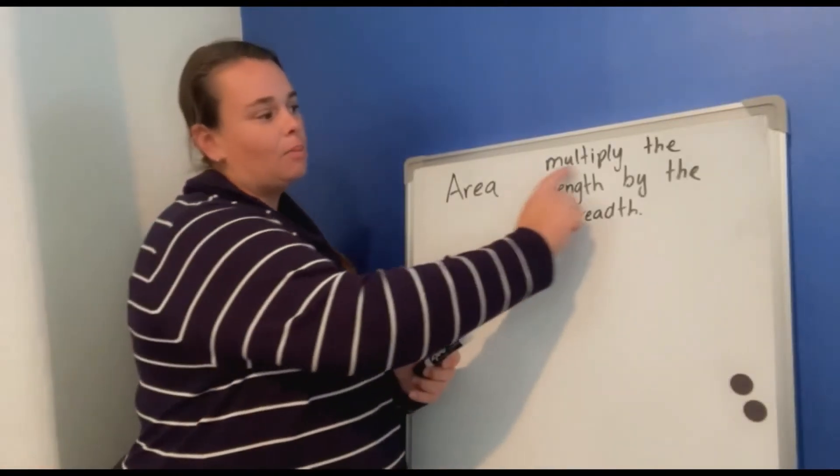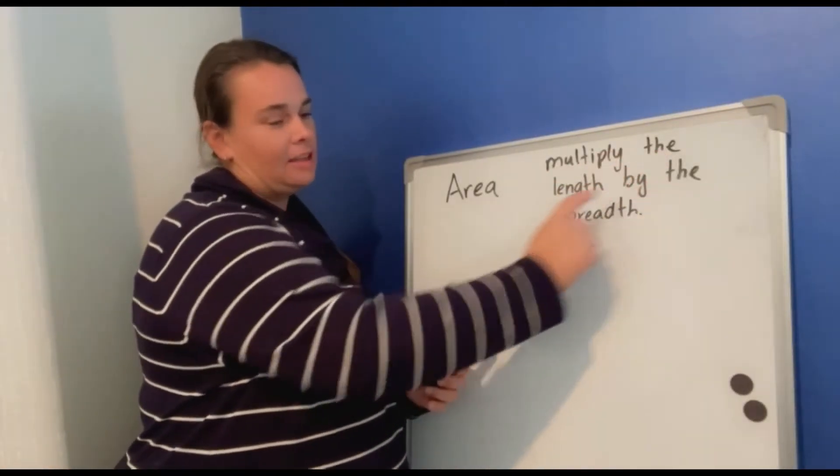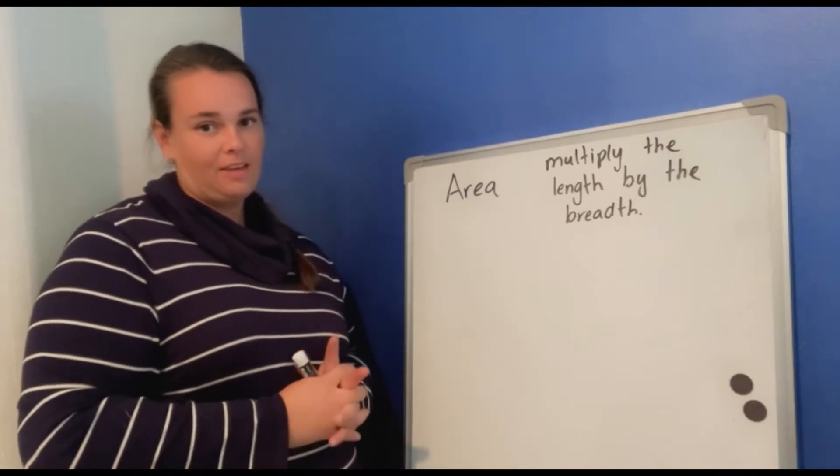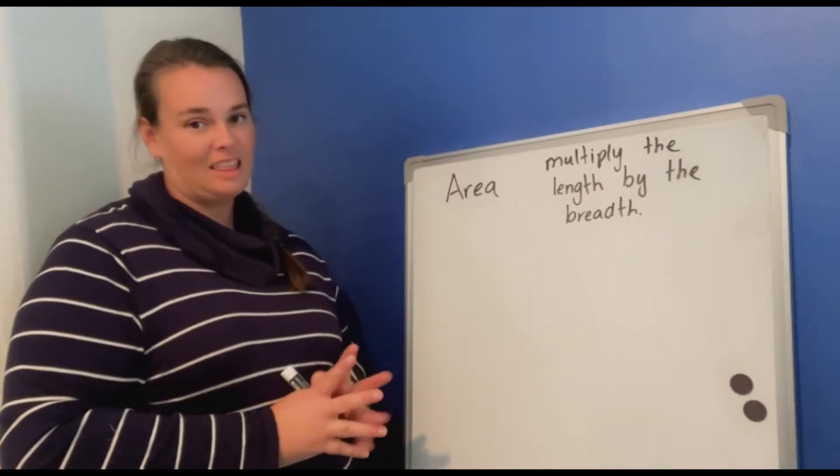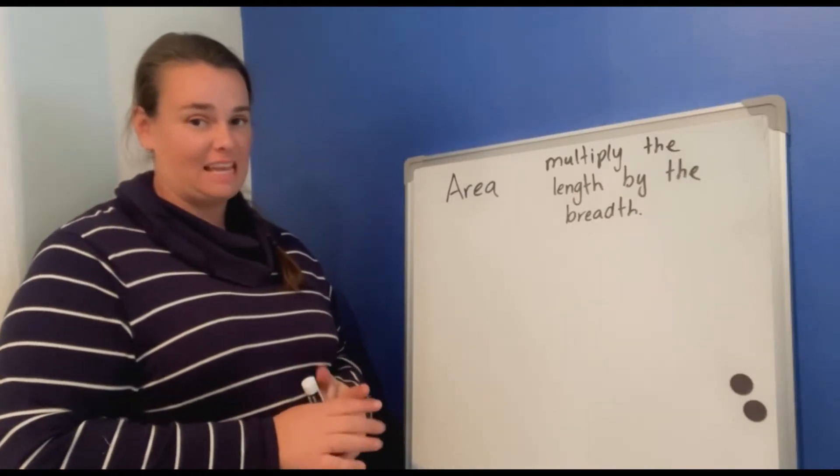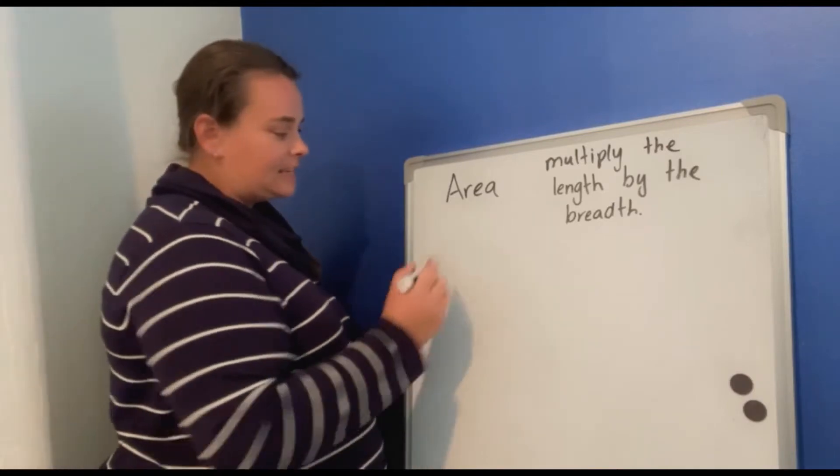Area means to multiply the length by the breadth. If you can remember that, then area is actually very easy. Let's start with a shape.